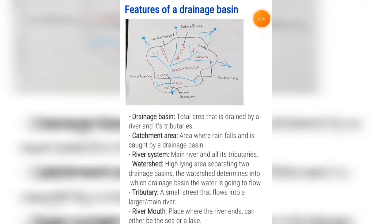The river system is the main river and all its tributaries. In this picture, it is shown by the blue lines. The watershed is a high-lying area separating two drainage basins. The watershed determines into which drainage basin the water is going to flow.